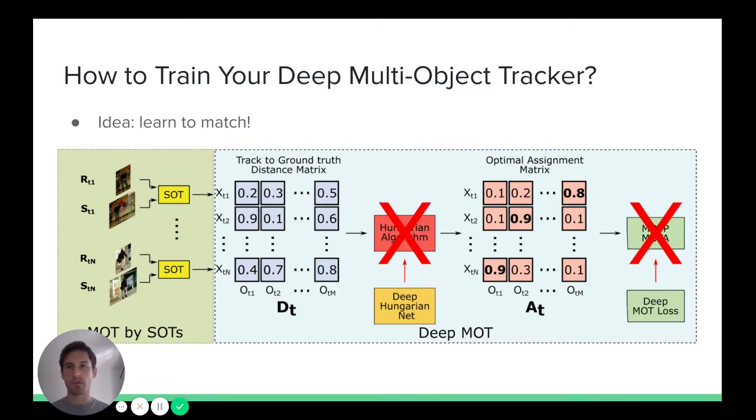Based on this, we devised a novel deep MOT loss that approximates MOTA and MOTP and is expressed as a differentiable function of the distance matrix and the estimated soft assignment matrix.